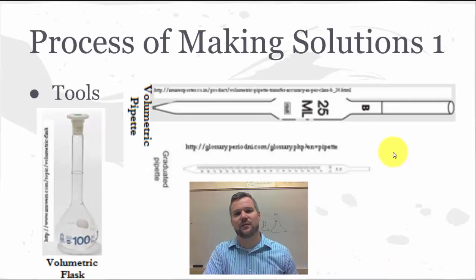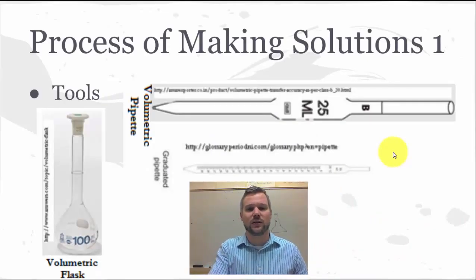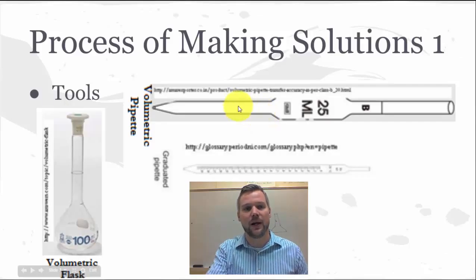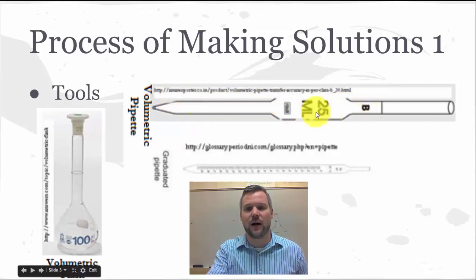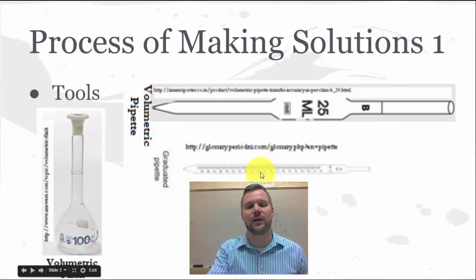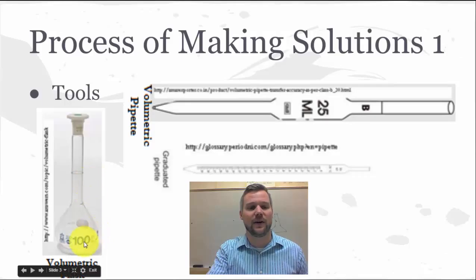When we make solutions, there are some tools we use. I'm going to point to them on the screen and then show you the actual tools. First is a volumetric pipette, which is only good for one volume — this one is only good for 25 milliliters because there's only one line marked on it. We also have graduated pipettes, which are good for measuring multiple different values and are a little bit easier to use for making solutions compared to a graduated cylinder. Finally, we have a volumetric flask, which is also only good for one volume — the volume listed on the side.